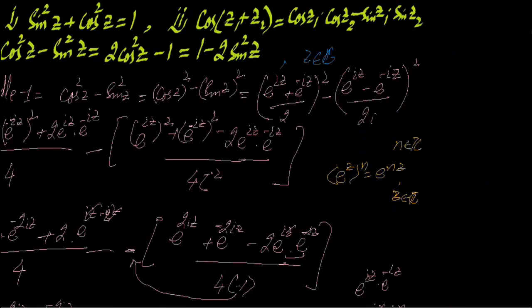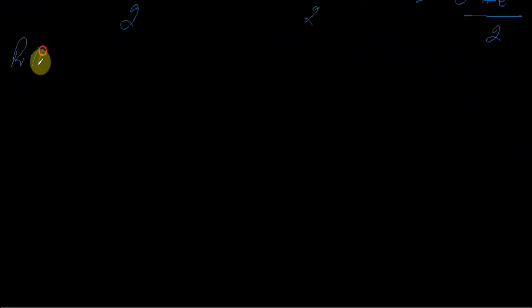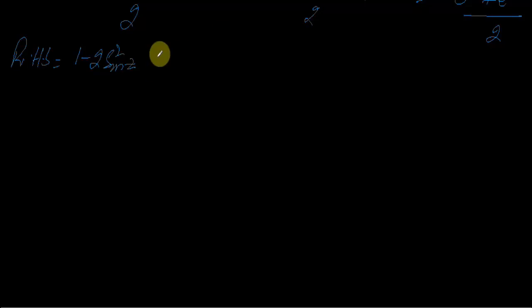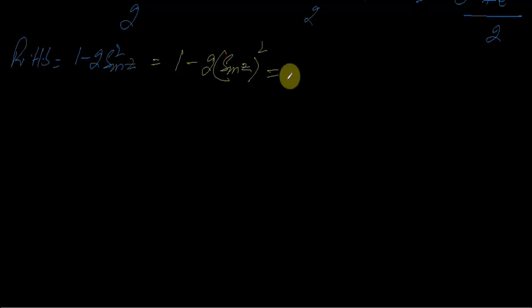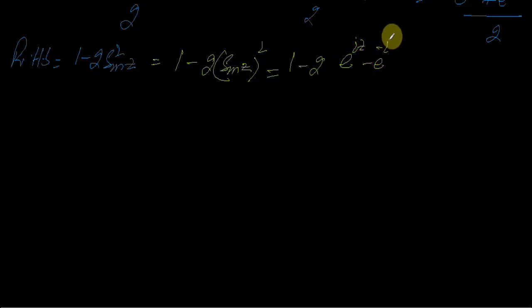Now you will take the right hand side. Right hand side — what is it — 1 minus 2sin²z. So you will also see the right hand side: this will be 1 minus 2sin²z. Now you will solve this. So what will happen here: 1 minus 2 times sin of z squared, which means 1 minus 2 times sin of something — substituting (e^(iota·something) − e^(-iota·something)) divided by 2·iota, whole squared.